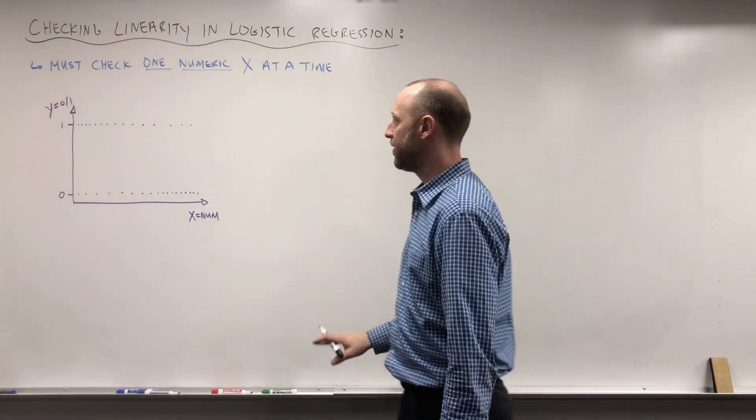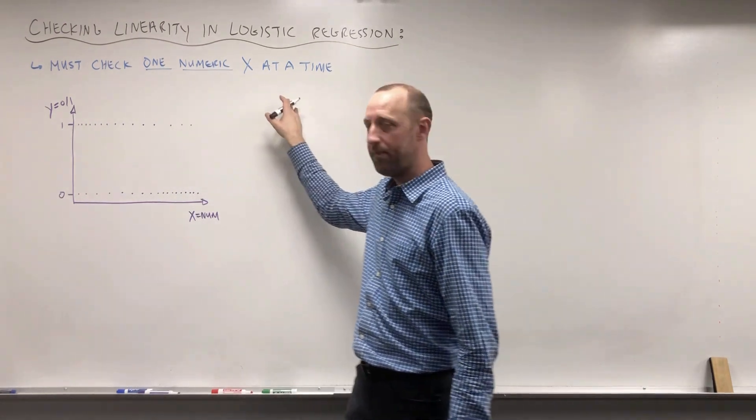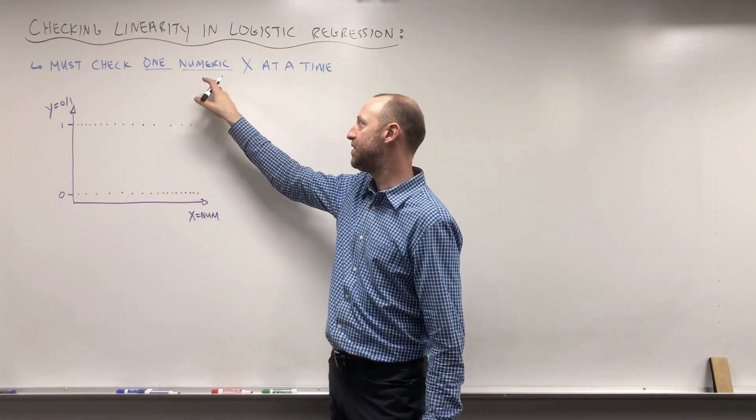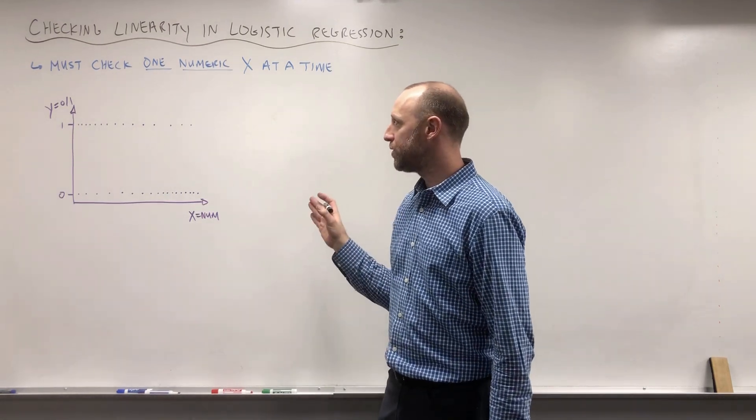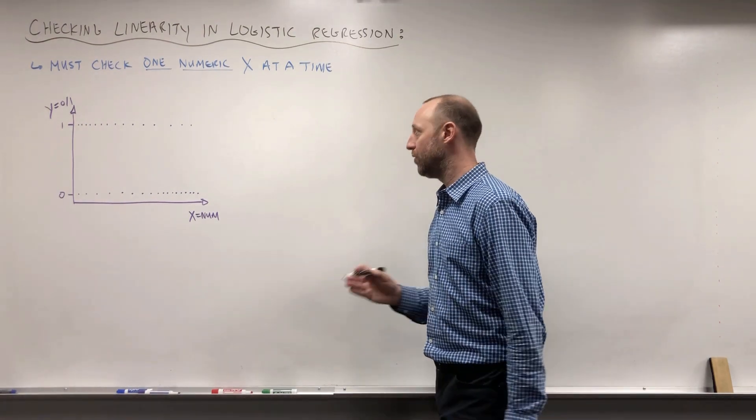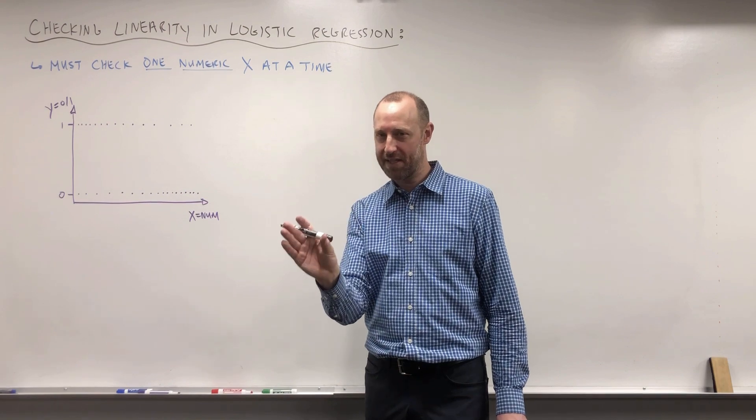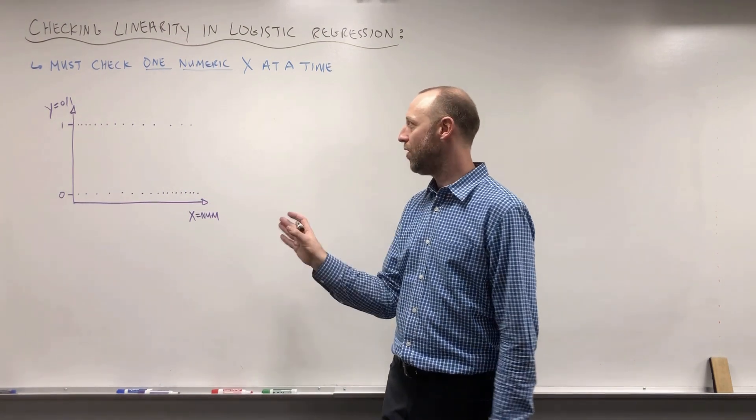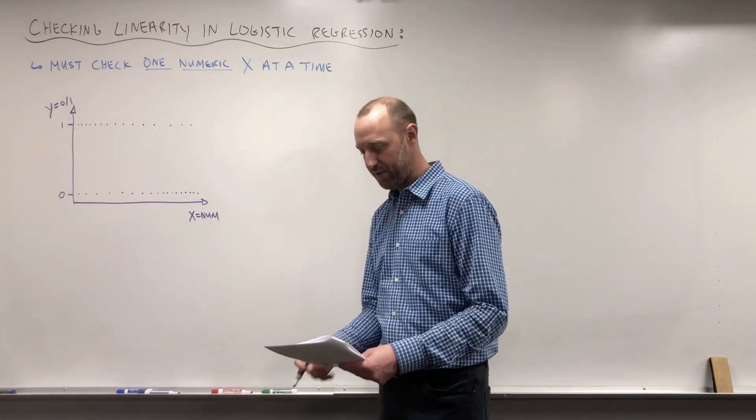I also want to make sure the point is clear that we have to check one numeric x variable at a time and we only need to check the numeric x variables. We don't assume that categorical variables are linearly related to the log odds. Remember categorical variables just give us one estimate, the point estimate of the log odds for each category. So there's no linear component to them.